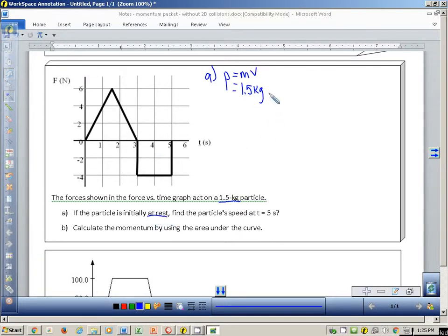Well, at rest means that it's got a velocity of zero. So when it initially starts out, it would have a momentum of zero kilograms meters per second. But now if we do this at a time of five seconds right here, if we come on over to this place, when we come on over here, what we can do is we can actually look at our areas on here. At five seconds, we've covered the area of the triangle and we've covered the area of the square.